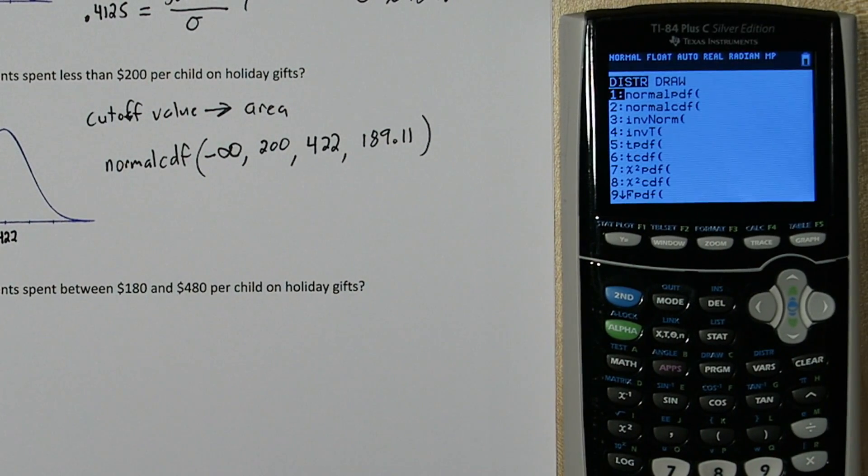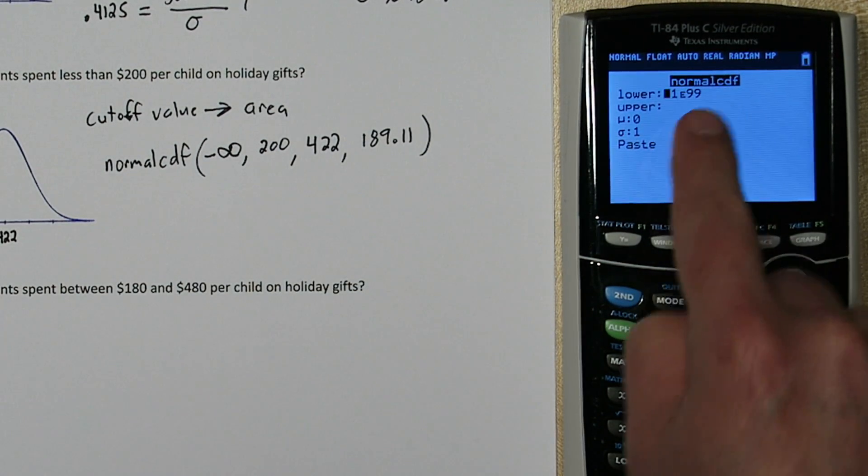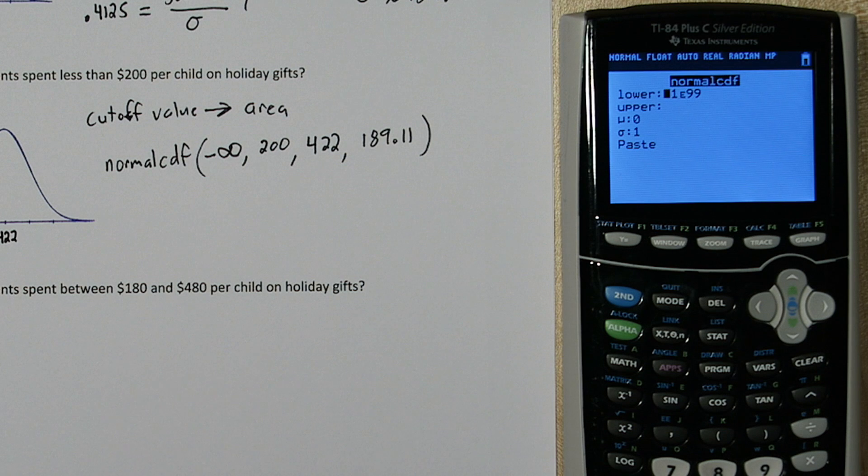And for lower limit, it has this negative 1 e to the 99. That's perfect. That's as close to negative infinity as we can get. So we'll just leave that there. For upper limit, let's put 200. And we'll type in our mean and our standard deviation.